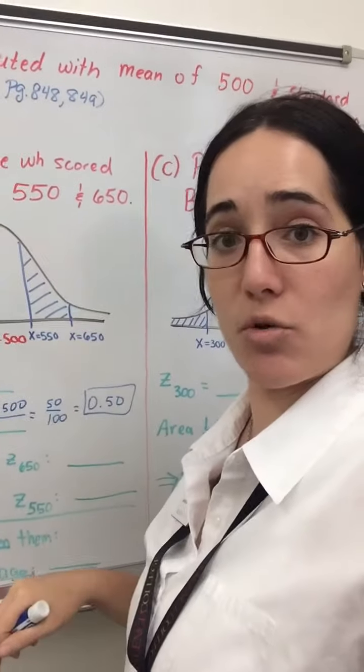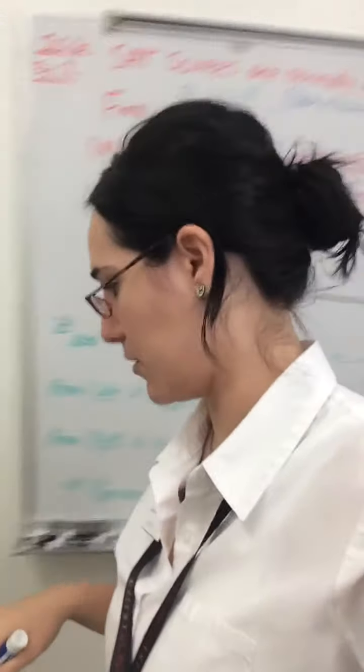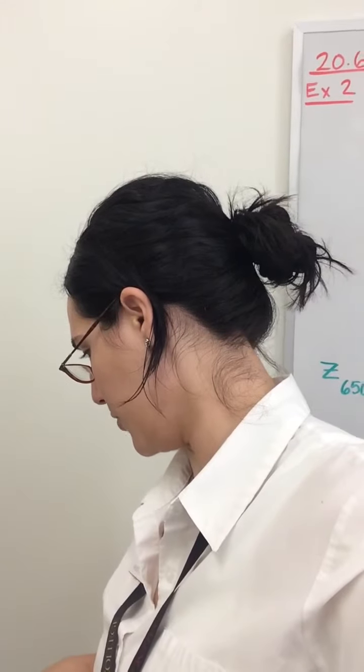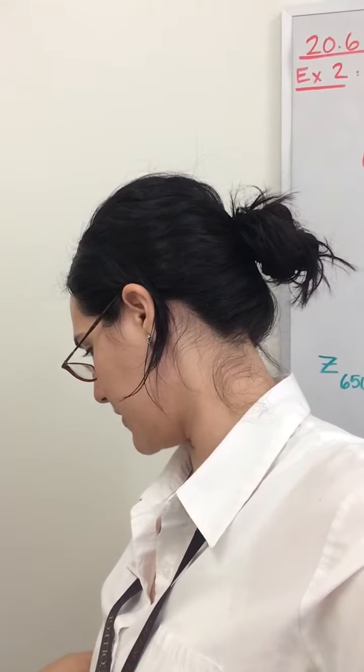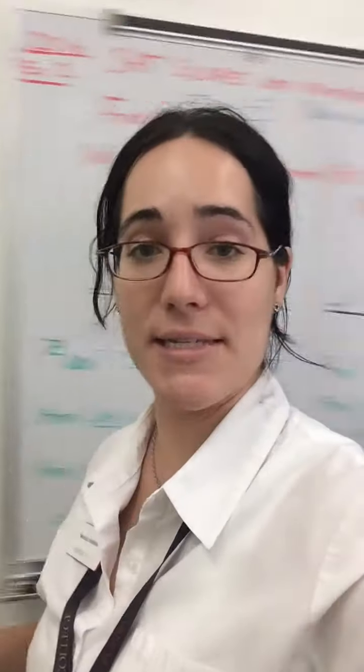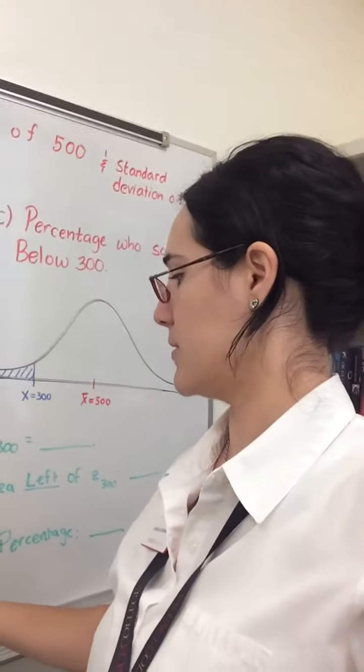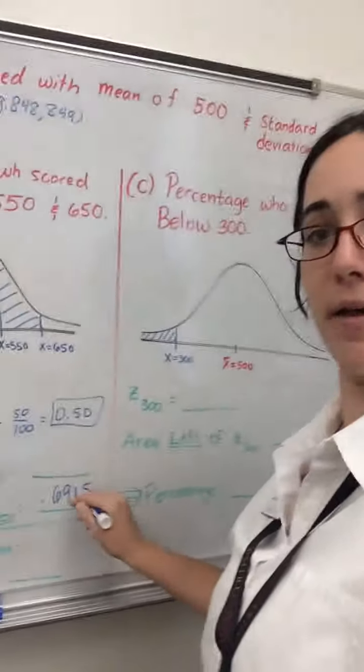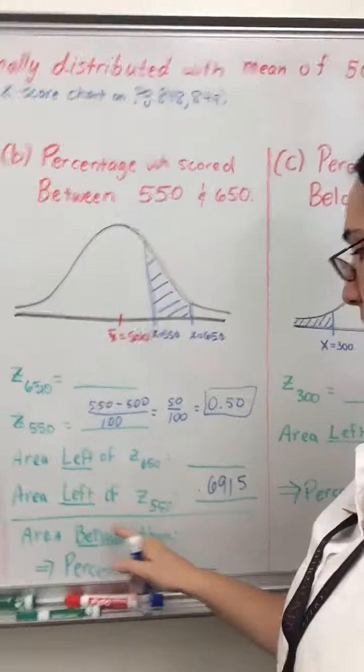Looking up that z-score in our chart, under the positive side, will give us the area to the left of that z-score of .6915.